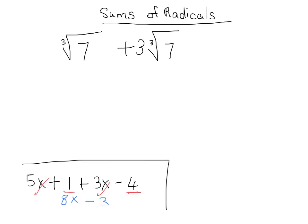This is exactly like saying 1x plus 3x. But in this case, it's 1 cube root 7 plus 3 cube root 7. Same idea, however. So 1 cube root 7 plus 3 cube root 7 is equal to 4 cube root 7. So again, as long as we have the same index and radicand, we can add and subtract freely.